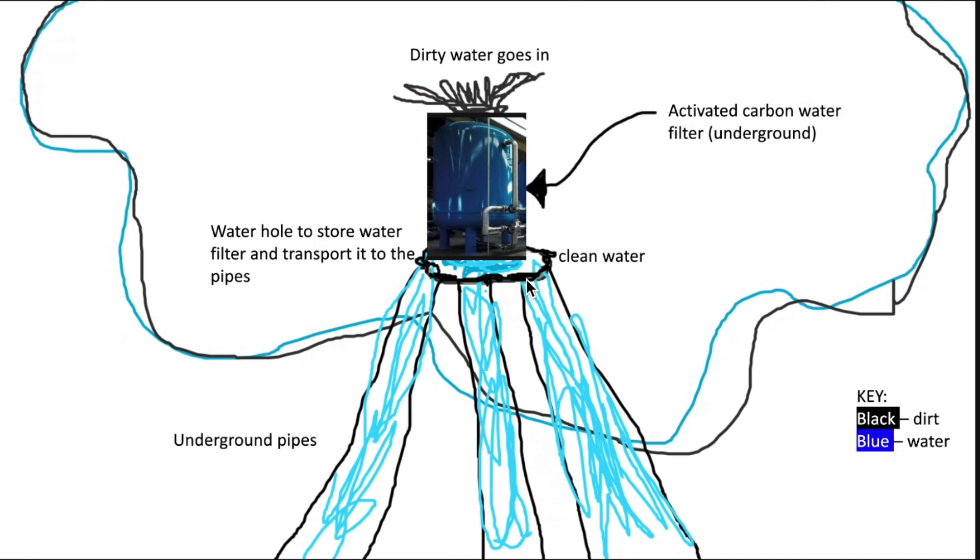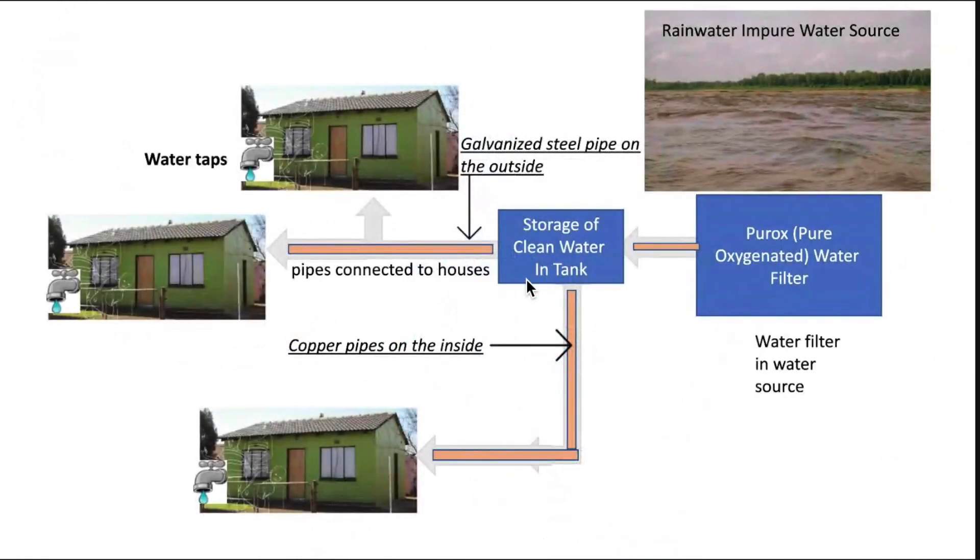Then the filtered water will go through an underground filter. It's connected to many pipes which will then lead to the houses. The houses will each have a tap on the side, which will pour out water.